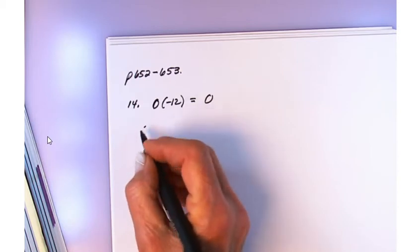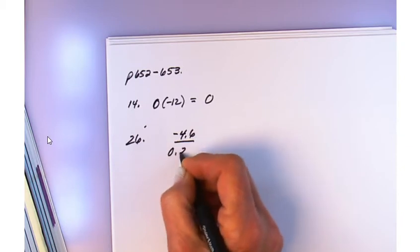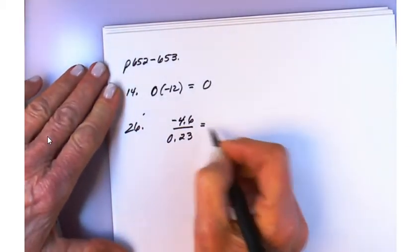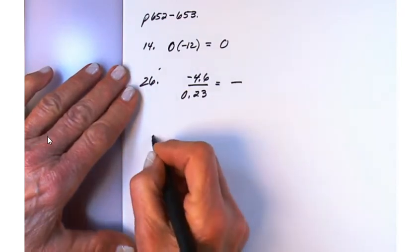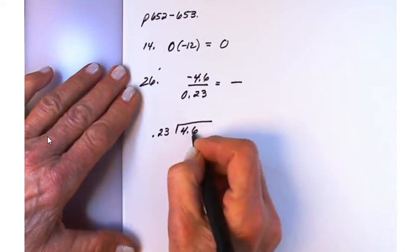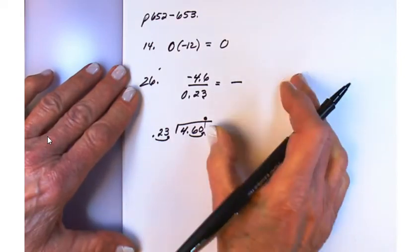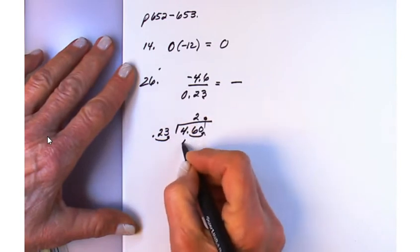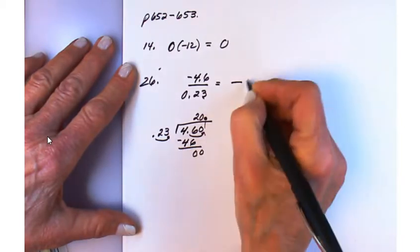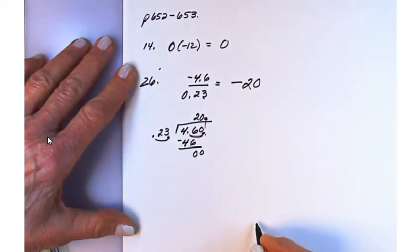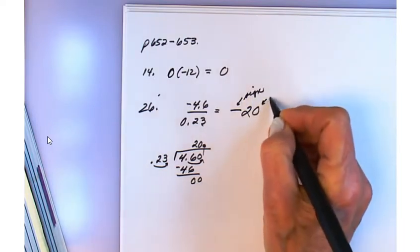Number 26: negative 4.6 divided by 0.23. Determine the sign first — unlike signs, so the answer will be negative. Move the decimal two places: 23 goes into 460. 23 into 46 is 2 times, bring down 0, 23 into 0 is 0 — answer is negative 20.